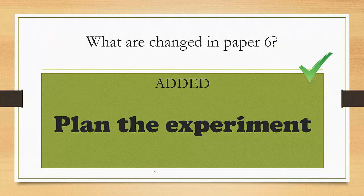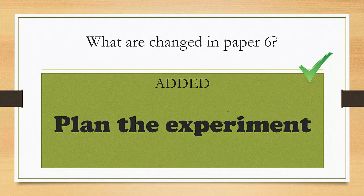Lastly, other than paper 2 and 4, paper 6 also made a change. And I do think this is even something that you should pay attention to. And the thing that they have added is something called you need to plan the experiment. So in the past, there were usually 4 questions, and all 4 of them were just simply doing some measurement and analyzing the data.